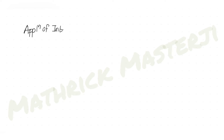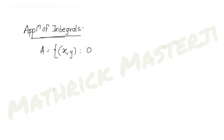Today's question is from the topic of applications of integrals. The question asks us to find area A of the region given in set form: x comma y, where x goes from 0 to 3 and y goes from 0 to the minimum of x squared plus 2 (a parabola) or 2x plus 2 (a line).